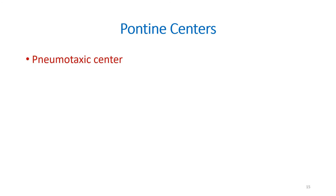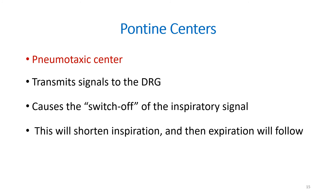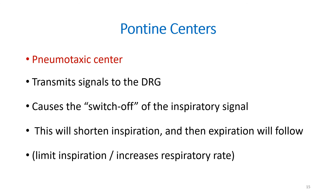The pneumotaxic center transmits signals to the DRG and causes the switch-off of the inspiratory signal, thereby shortening inspiration so that expiration follows. The primary effect is to limit inspiration, and secondarily, the rate of respiration increases. So the important point is: the pneumotaxic center limits inspiration and thus increases the respiratory rate.